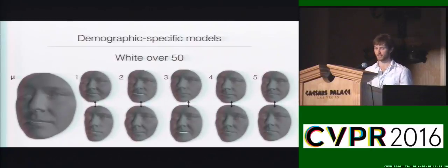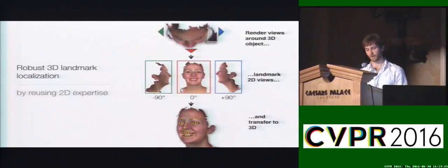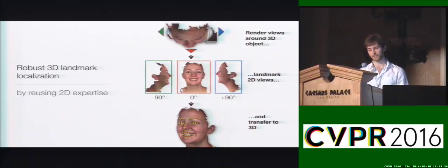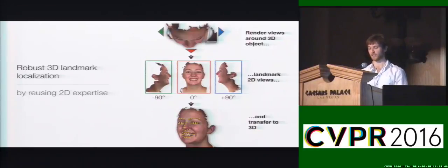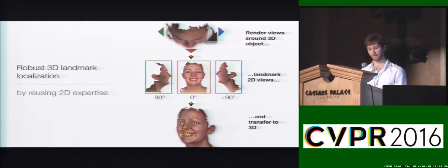Our strategy for constructing the models uses a non-rigid iterative closest point algorithm to establish dense correspondence, guided to convergence by a set of sparse annotations. We take a novel approach to 3D landmark localization, leveraging the extensive expertise available for 2D landmark localization to perform this 3D task. To do this, we render a set of views from each 3D scan. For each view, we render a normal RGB image, but we also render an XYZ shape image so we can map locations in the texture back to the 3D surface. Fitting the RGB views using a state-of-the-art 2D facial landmark localization technique allows us to robustly locate 3D landmarks.